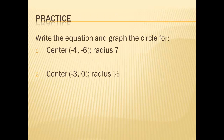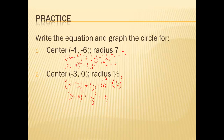Here we have two problems where we're given the center and the radius, and we want to write the equation. We just have to plug it into our template from the previous page. So we have x minus h squared and y minus k squared, and we can simplify by handling our negative negatives and squaring the 7.